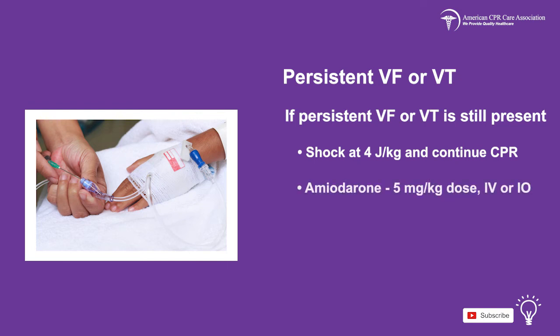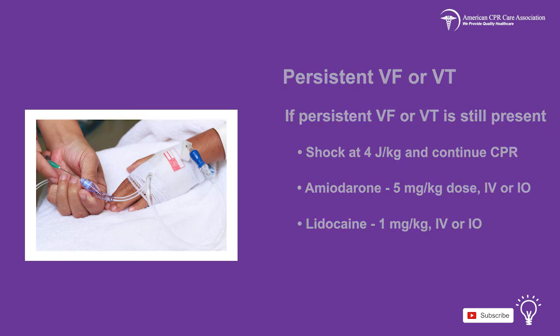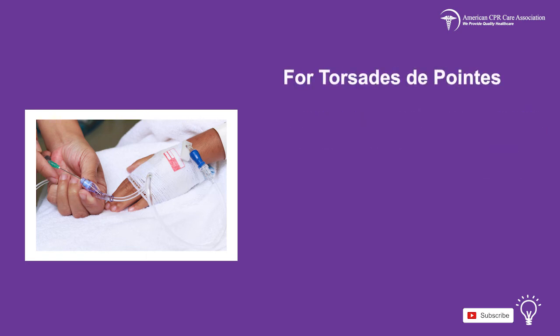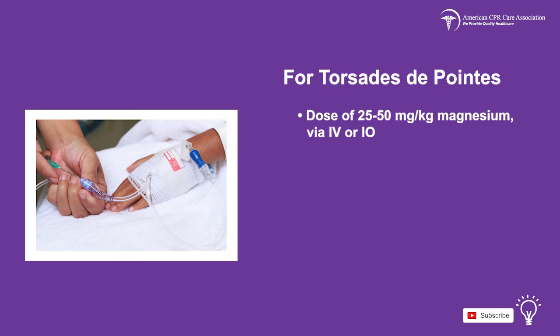Then administer amiodarone at a dose of 5 milligrams per kilogram via IV or IO access, or you may administer 1 milligram per kilogram of lidocaine via IV or IO. For torsades de pointes, give the patient a dose of 25 to 50 milligrams per kilogram of magnesium via IV or IO. Continue CPR.